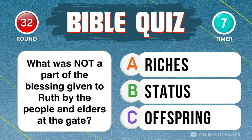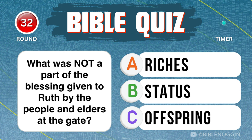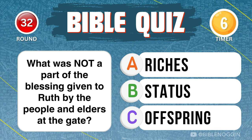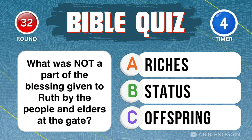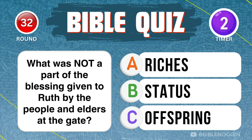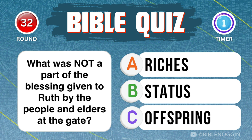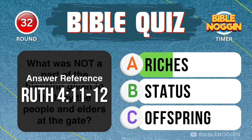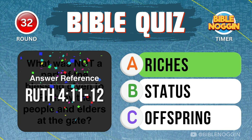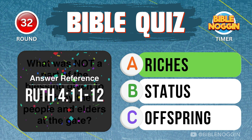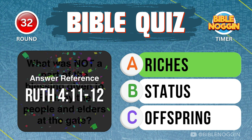Question 32: What was not part of the blessing given to Ruth by the people and elders at the gate? Riches — found in Ruth chapter 4, verses 11 and 12.